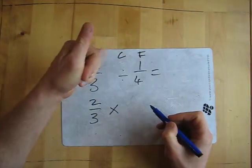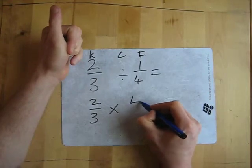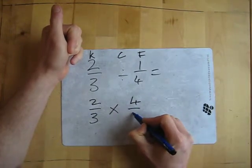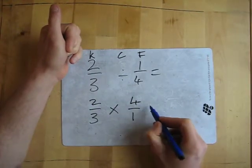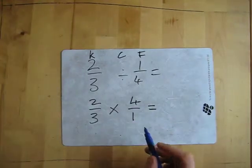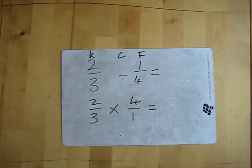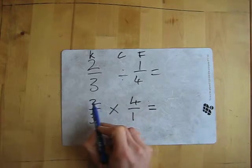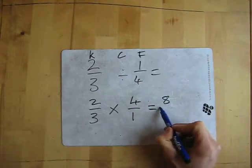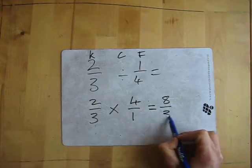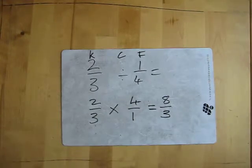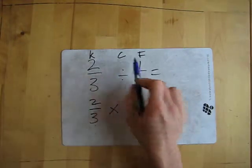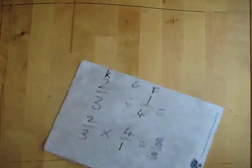So just flip them around, I've got 4 over 1, and then it becomes a multiply. Multiply is very easy; all you do is multiply the top numbers and multiply the bottom numbers. So we do 2 times 4 which is 8, then 3 times 1 which is 3, and that's how you divide it. So KCF and then just multiply.